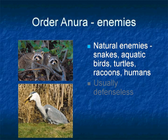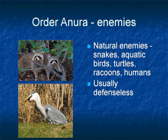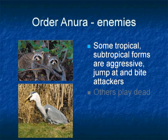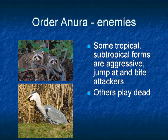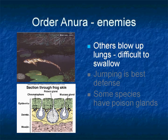Frogs have many natural enemies including snakes, aquatic birds, turtles, raccoons, and humans. These poor animals are usually defenseless, but some tropical and subtropical species are very aggressive — they jump and bite. Others play dead to avoid predation. Few frogs inflate their lungs with air to increase their size so they become hard to swallow. For most frogs, jumping is the best defense, though few species develop poison glands.